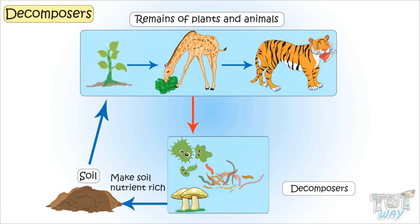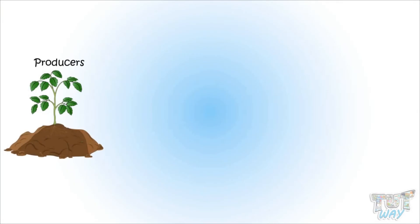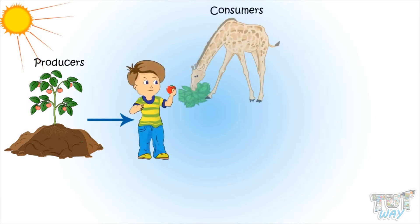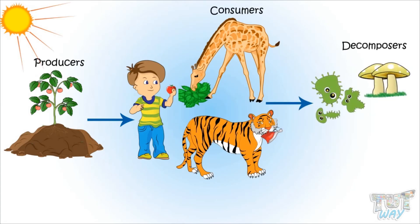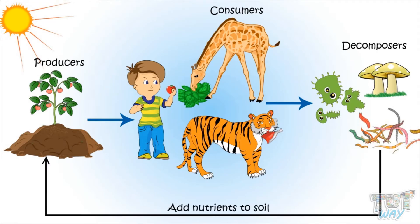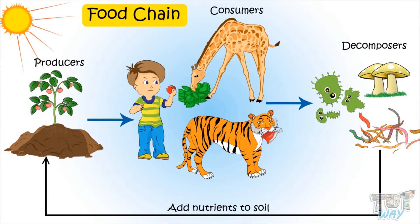It starts with the producers that use the nutrients from the soil and sunlight to produce food. And these producers provide food for all the consumers. And all the consumers, when dead, the decomposers convert them into nutrients and again add them to the soil. And such flow of energy between producers, consumers, and decomposers is called a food chain. In a single habitat, there can be one or many food chains. Let's see examples of such food chains.